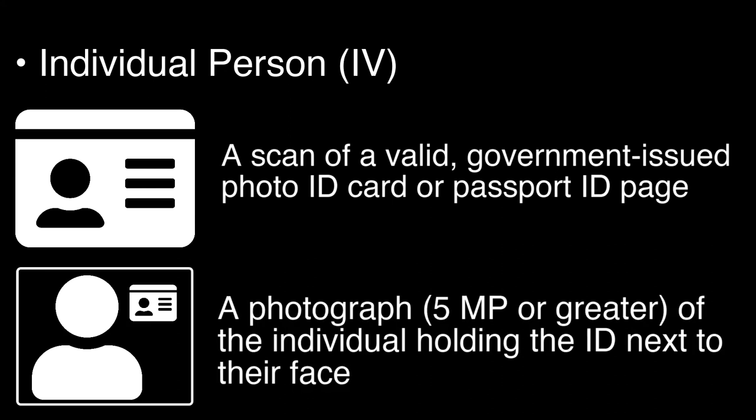To validate the identity of an individual person, please provide the following: a scan of a valid government-issued photo ID card or passport ID page. The ID number may be obscured, but we must be able to see the name, address, date of birth, and photograph of the individual. Also provide a photograph of the individual holding the government-issued ID next to their face so that the individual's face may be compared with the image on the ID. The photograph should be at least 5 megapixels. Most current smartphones can provide an image of 5 megapixels or greater.